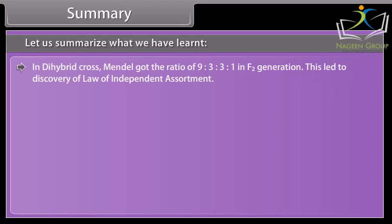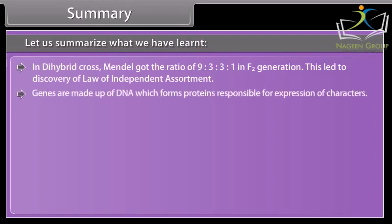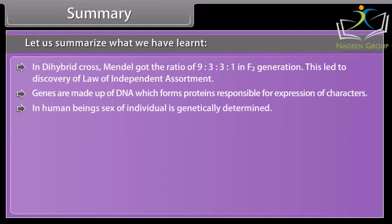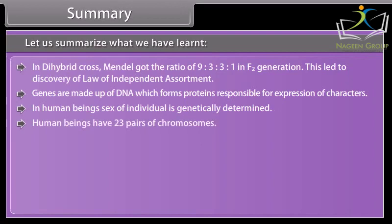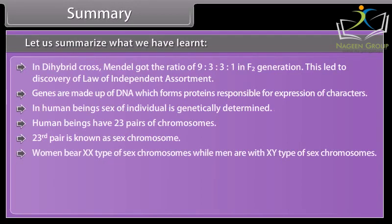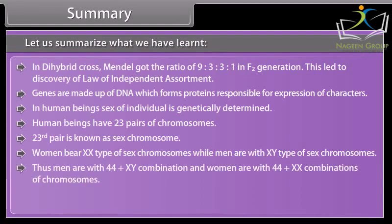Genes are made up of DNA, which forms proteins responsible for the expression of characters. In human beings, the sex of an individual is genetically determined. Human beings have 23 pairs of chromosomes; the 23rd pair is known as the sex chromosome. Women bear the XX type of sex chromosomes, while men have the XY type. Thus, men have a 44 + XY combination and women have a 44 + XX combination of chromosomes.